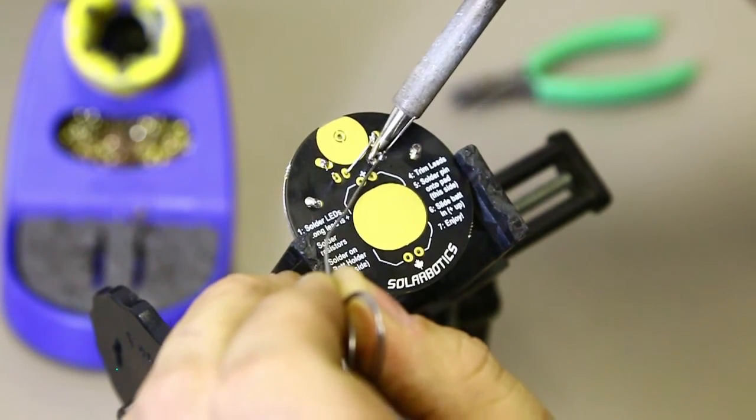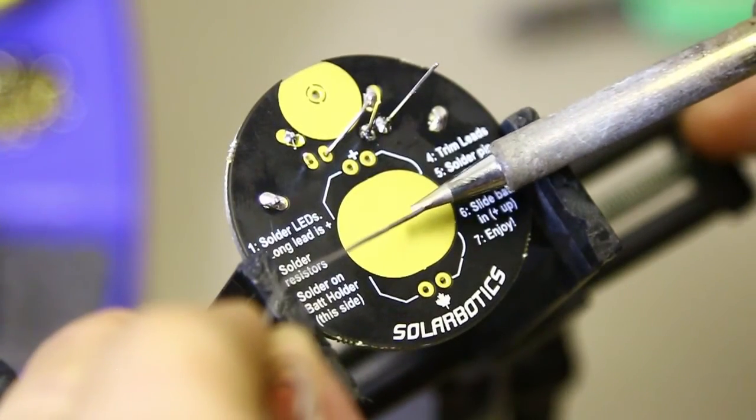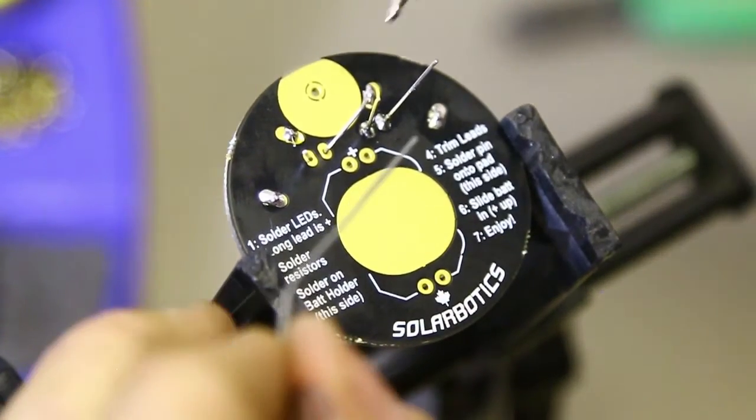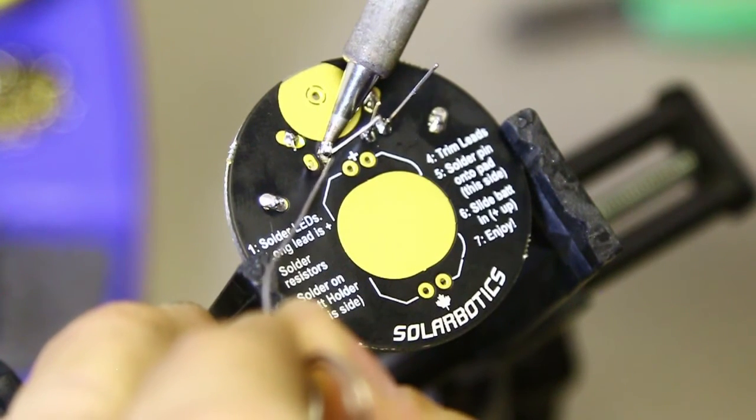Do that again. Once again, we will tin the iron and apply the wet of the iron and the solder to the opposite side.